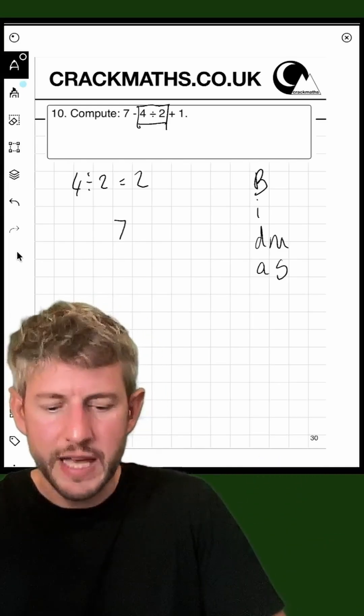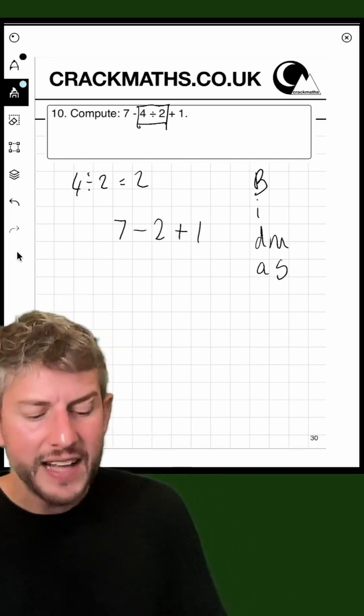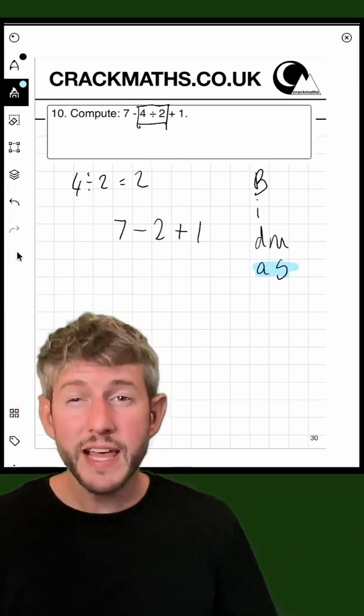I can replace this whole section with a two. Now what I get is seven, take away two plus one. As you'll see, add and subtract, when I wrote down the acronym of BIDMAS, have been written on the same line because they get done together.